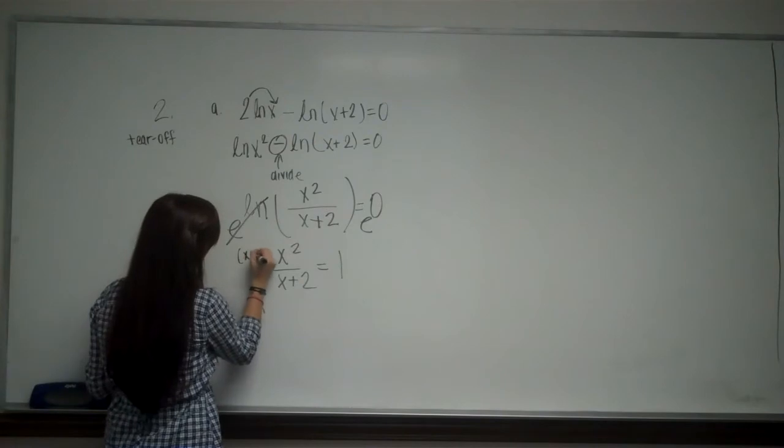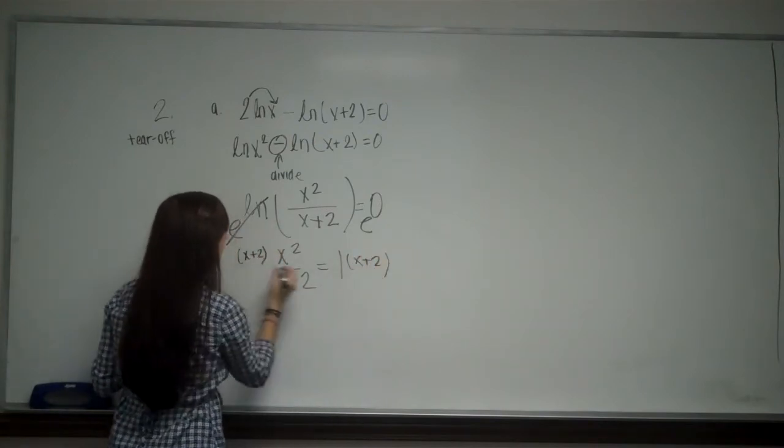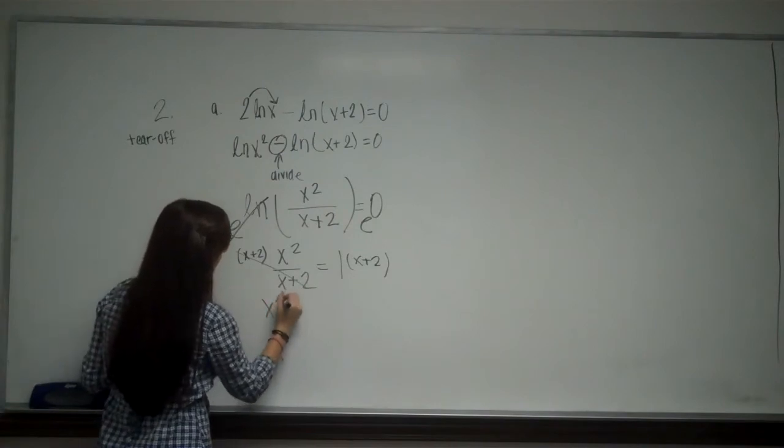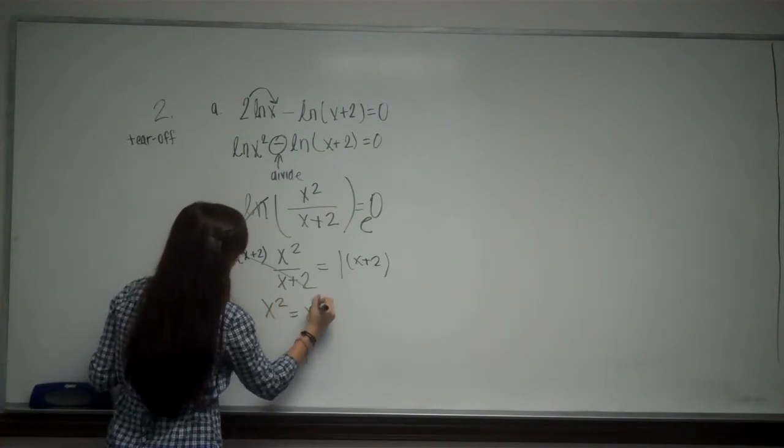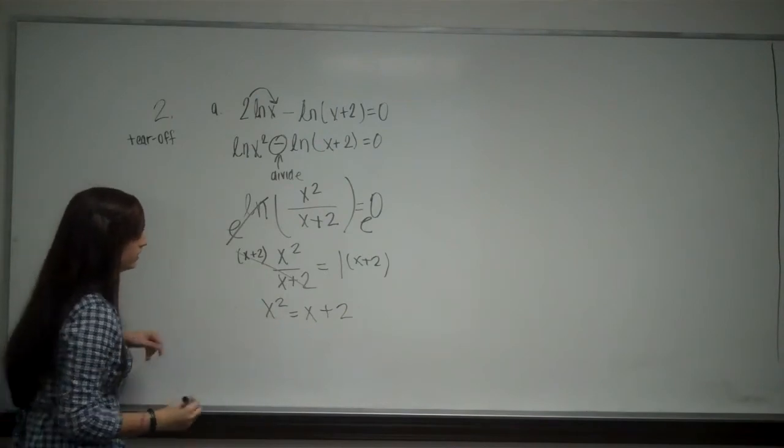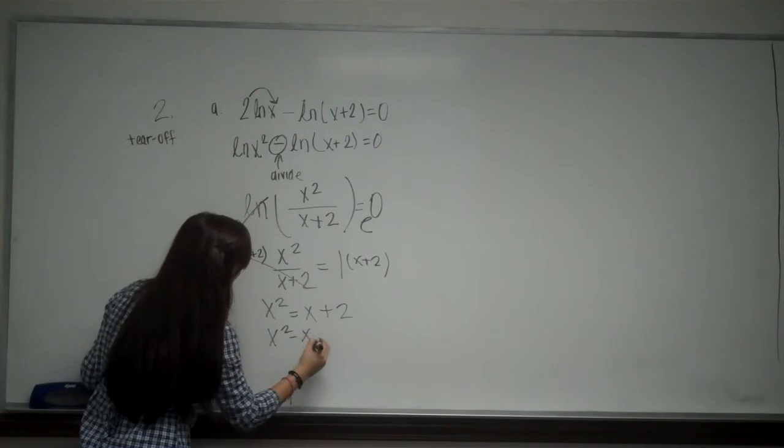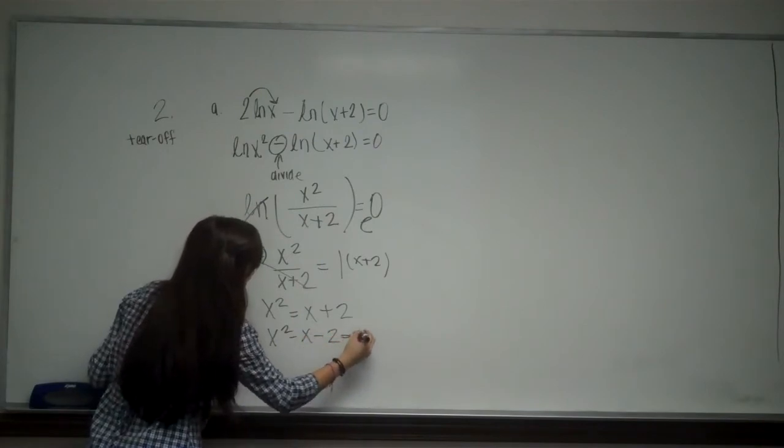I can multiply each side by x plus 2. These two would cancel. So I have x squared equals x plus 2. Now I am going to want to subtract everything to one side. So I have x squared minus x minus 2 equals 0.